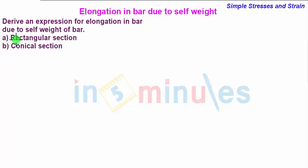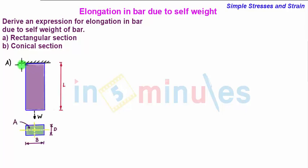So let us first start with the first section which is a rectangular section. Now let us consider a rectangular section bar whose length is L and it has been fixed at the top end and is hanging freely at the bottom end.